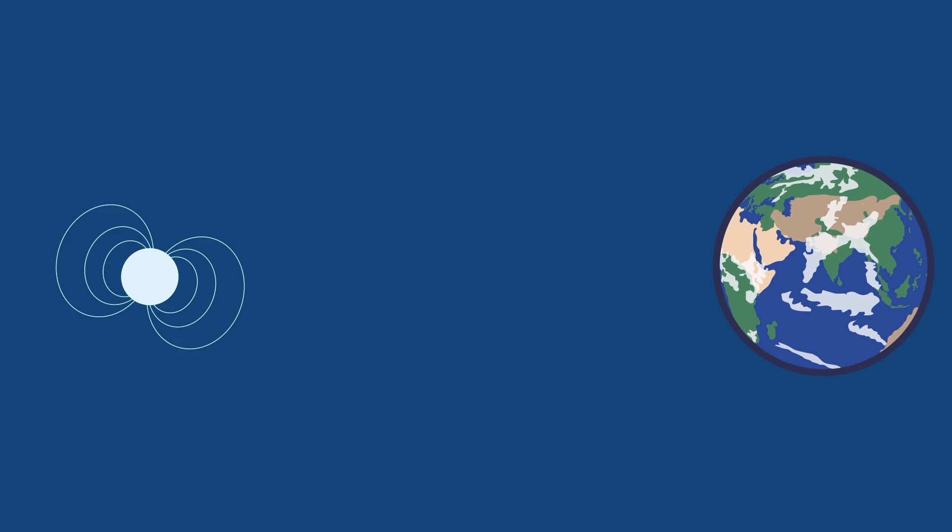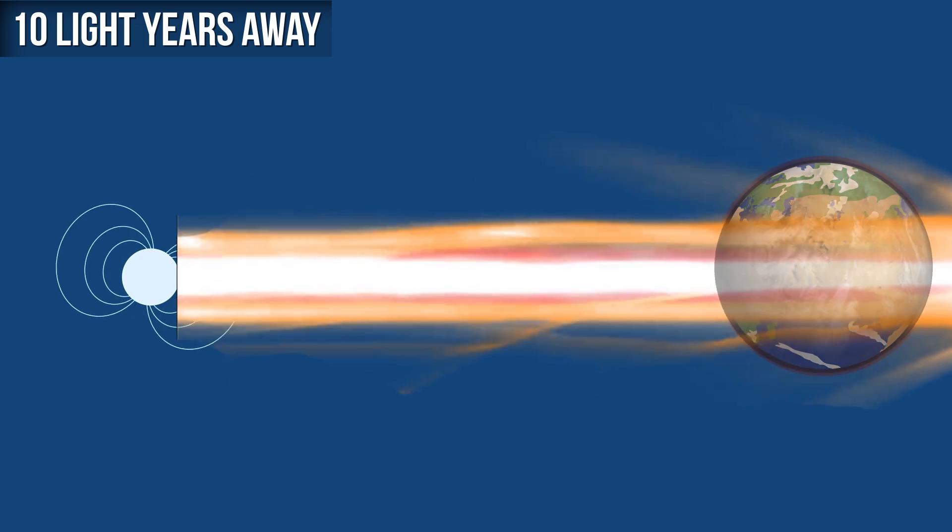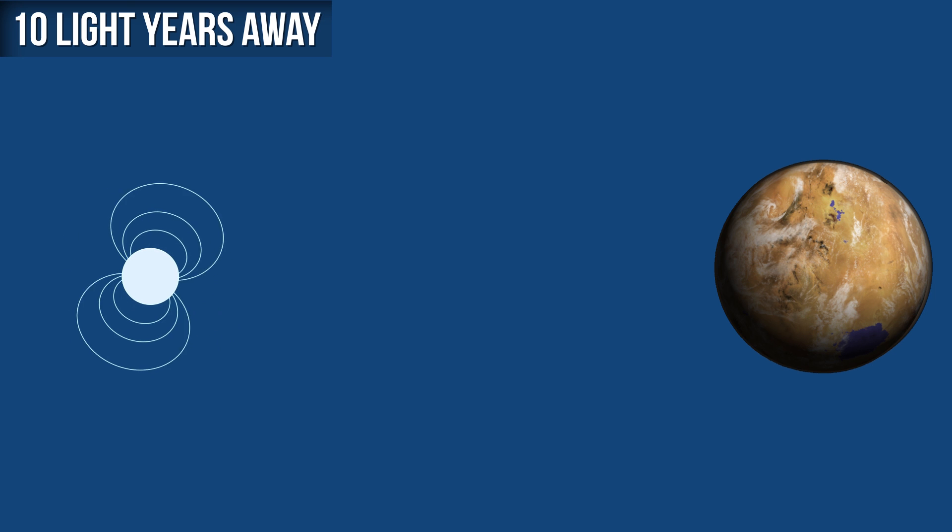The effects on Earth were very minor, but if this had happened to a magnetar that was 10 light years away from us instead, the effects would be far more severe. It would be enough to totally destroy the Earth's ozone layer, and also destroy most of the planet's surface. Life on Earth would almost be totally destroyed, and we wouldn't even know that it was coming until it hit us.